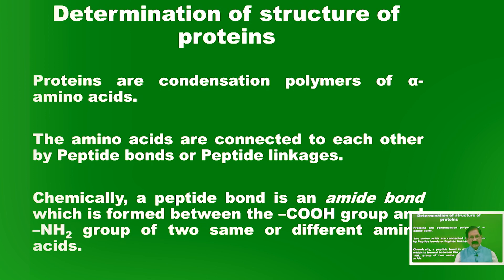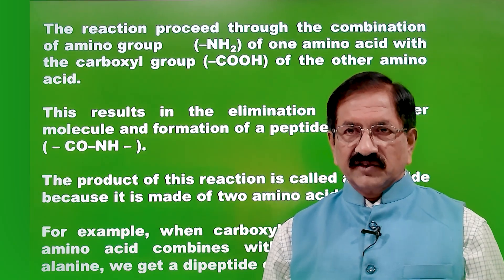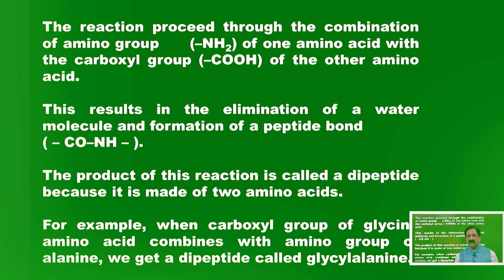Har amino acid mein ek COOH group hota hai — carboxylic acid group — aur ek amino group, NH2 group hota hai. Jab yeh do amino acids aapas mein interact karte hain, to ek water molecule nikalta hai, aur ek amide bond ka formation hota hai — amide bond arthat CONH bond.